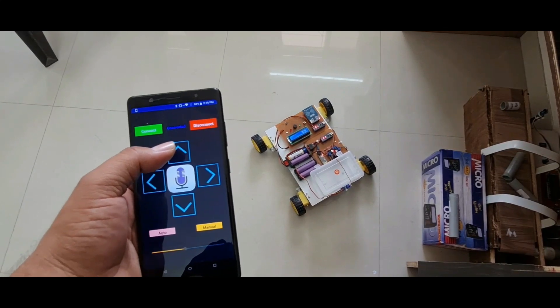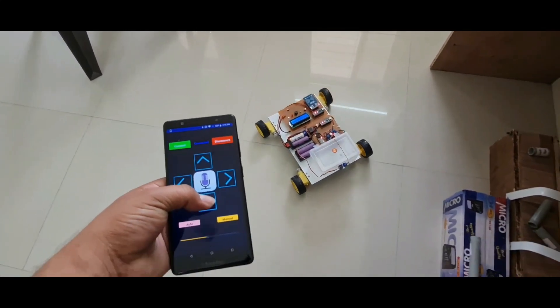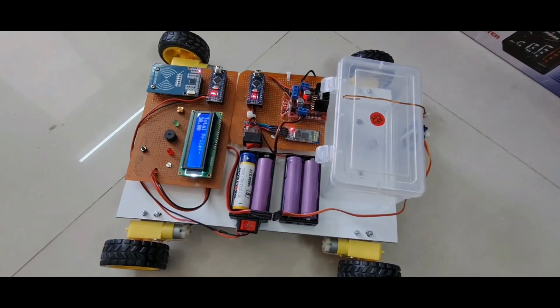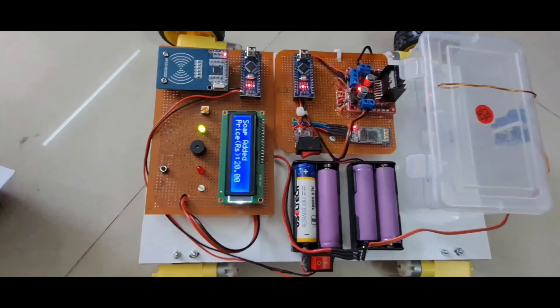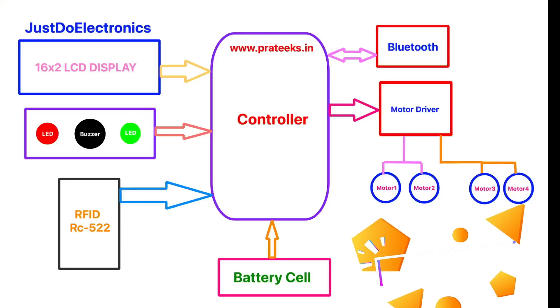I will show you how to control this robot through the Bluetooth app. This is a very interesting project and I will also show how the smart trolley works in this robot car. When you scan any card, the box will automatically open and you can put items in.